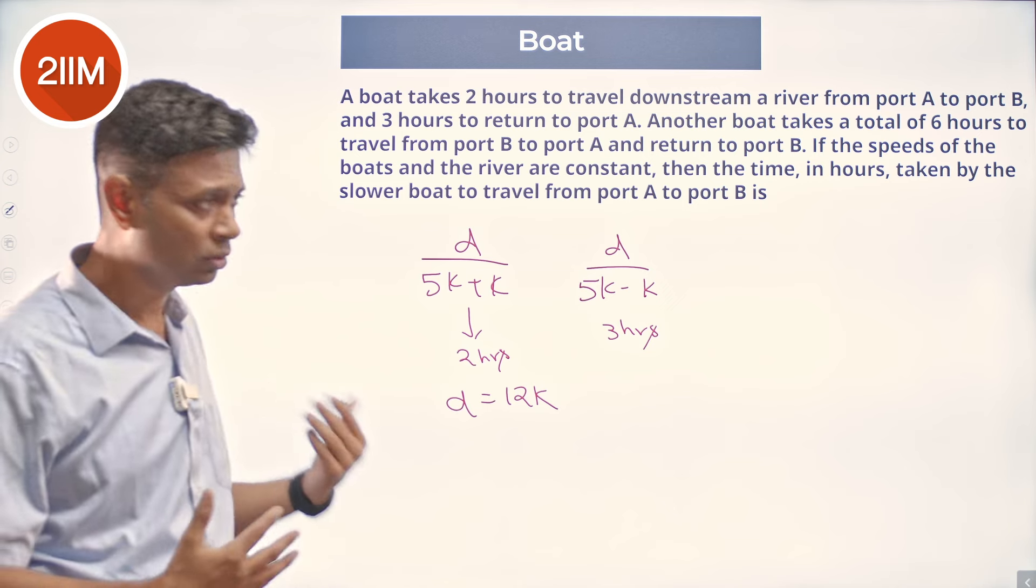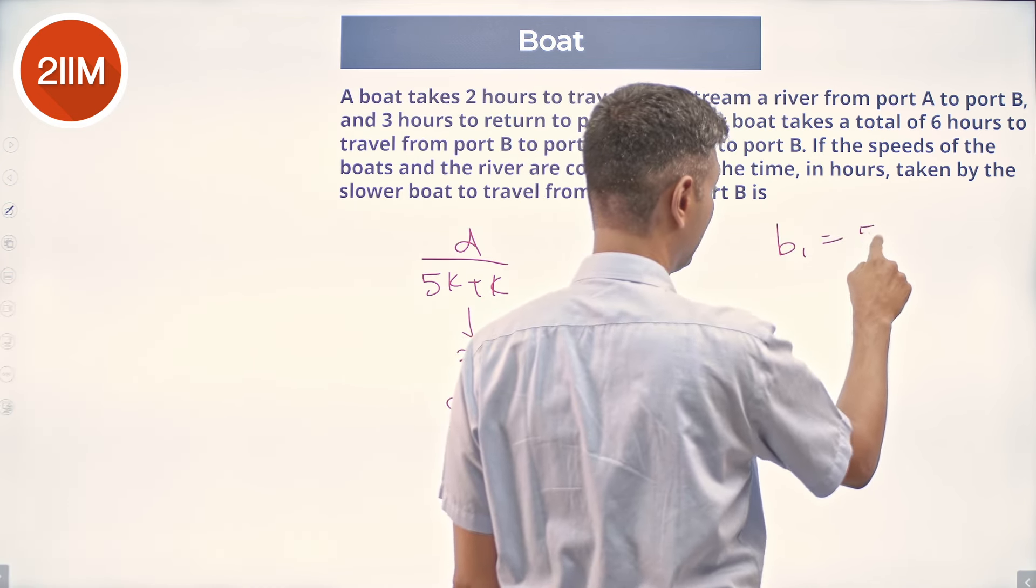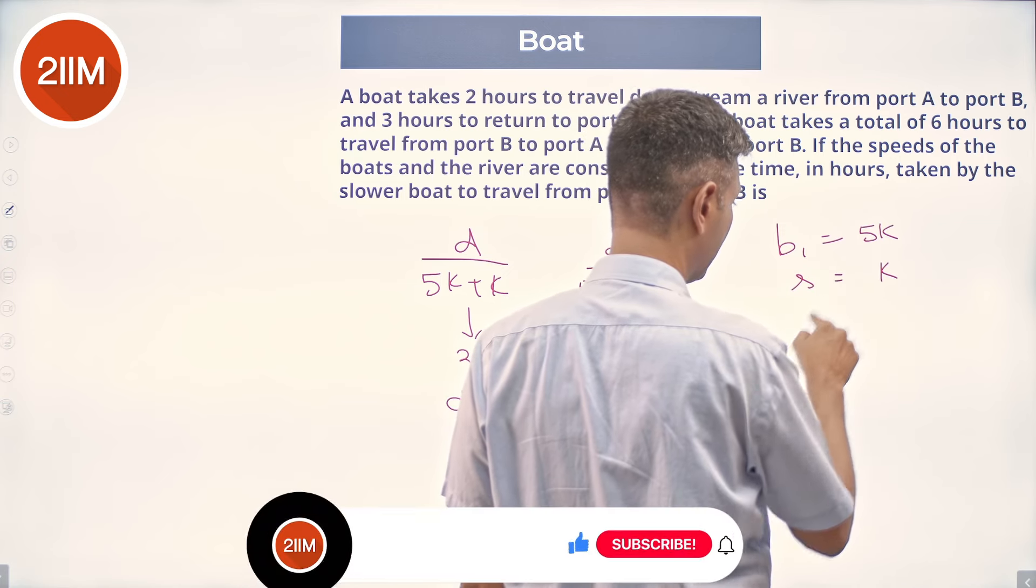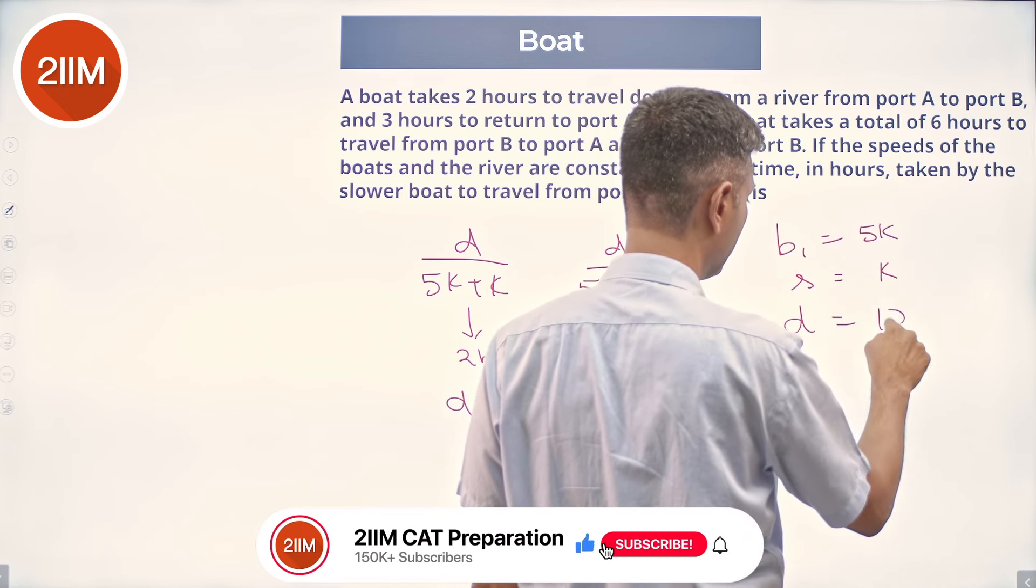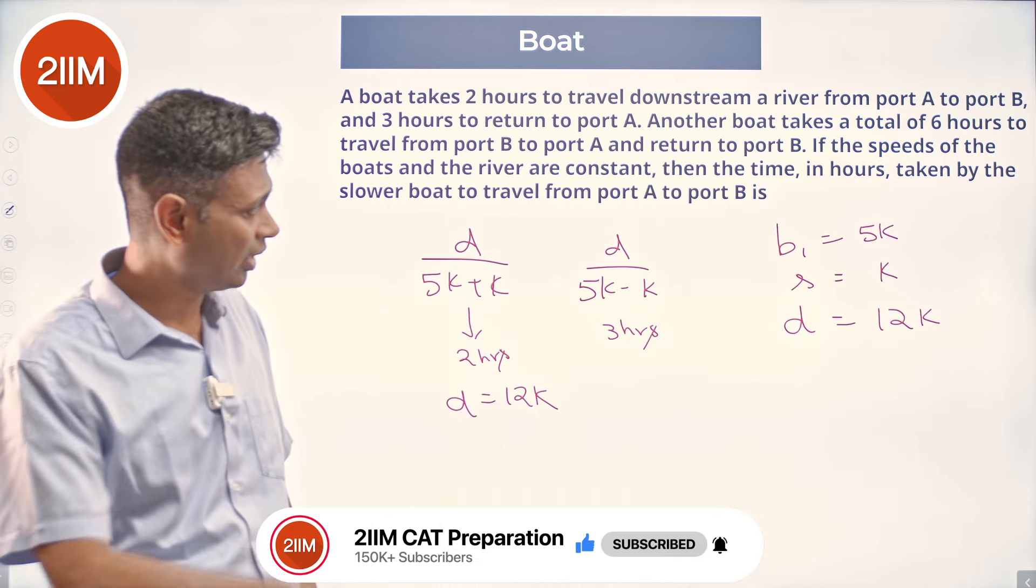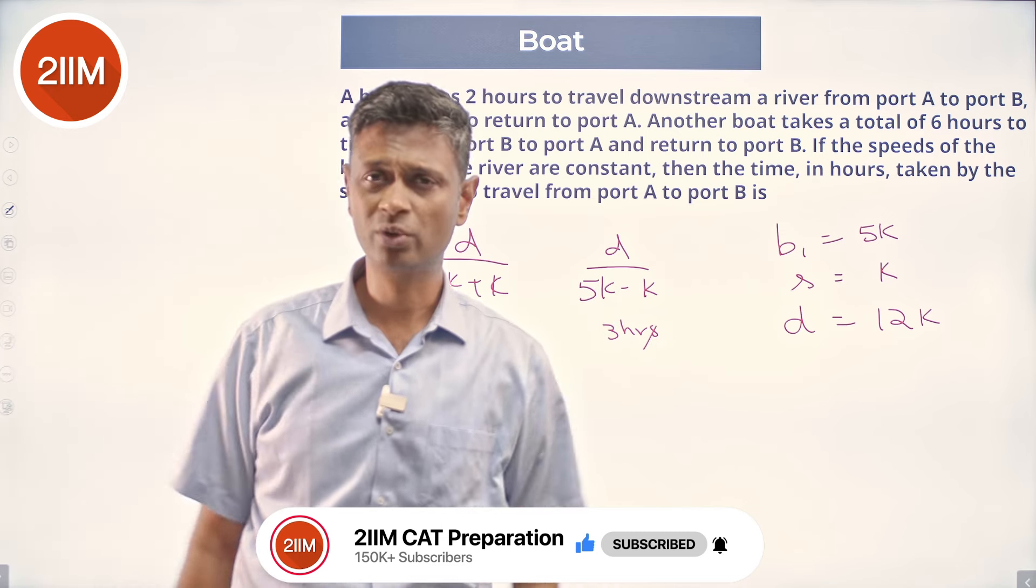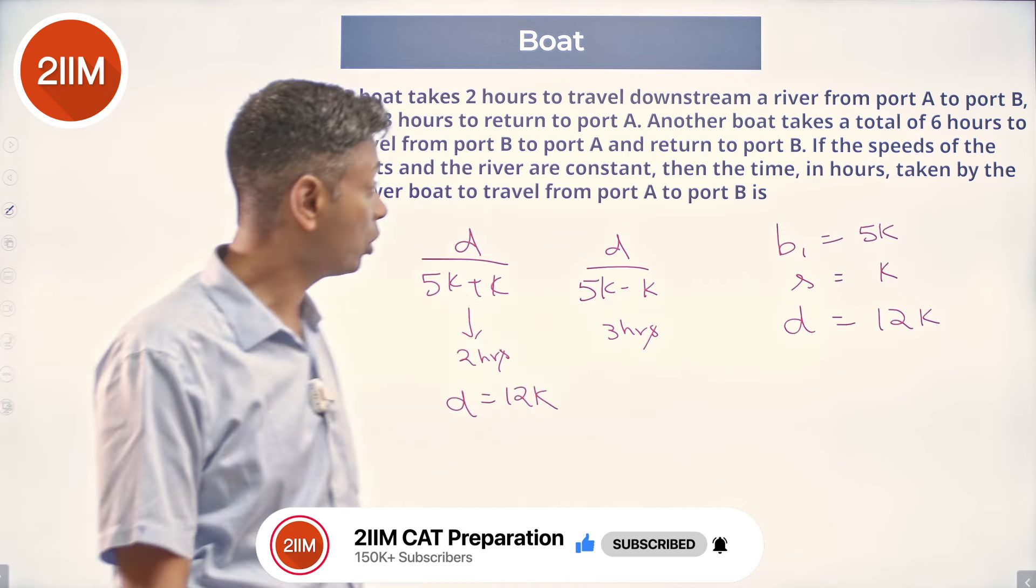So, now, we have got speed of boat 1 to be 5K, stream to be K, distance to be 12K, right? So far so good. So that it nicely works to be 2 hours and this is in kilometers per hour, that is in kilometers everything works out, the units cancel out, all of that.